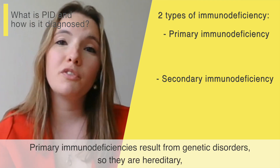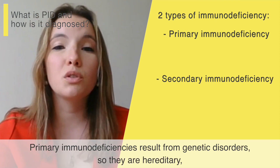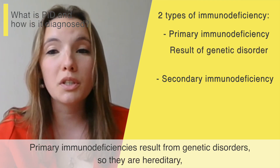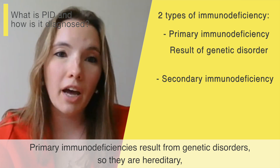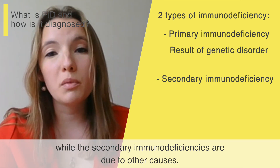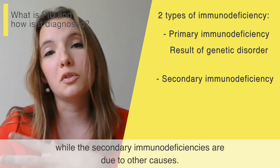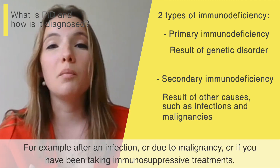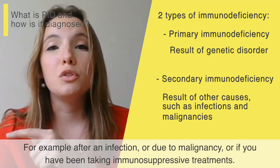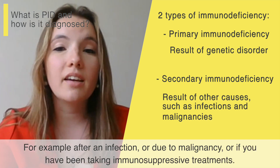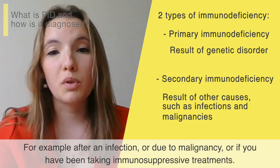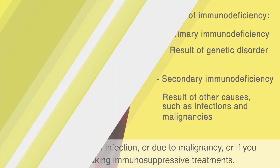Primary immunodeficiencies result from genetic disorders, so they are a hereditary trait, while secondary immunodeficiencies are due to other causes — for example, after an infection, due to malignancy, or if you have been taking immunosuppressive treatments.